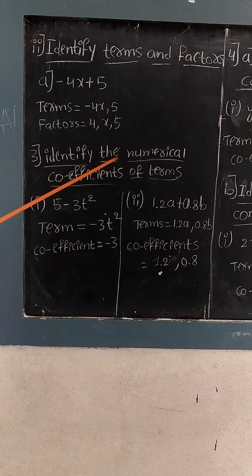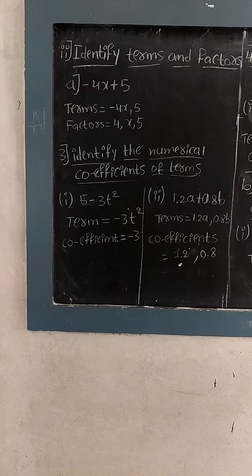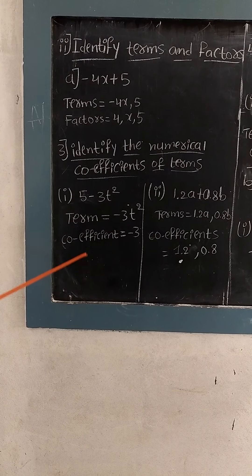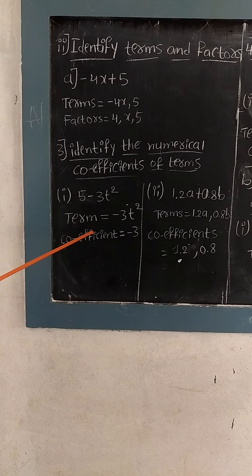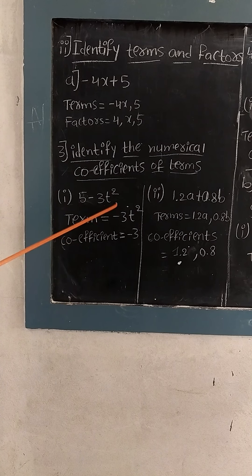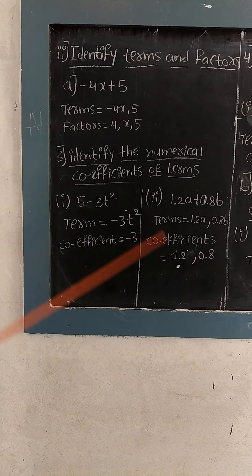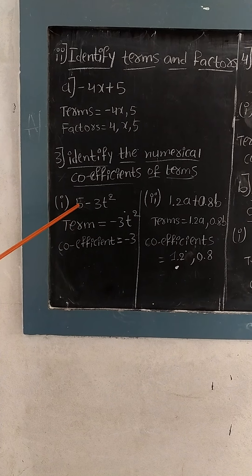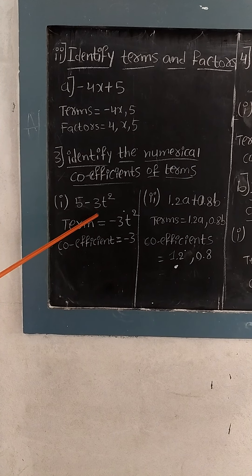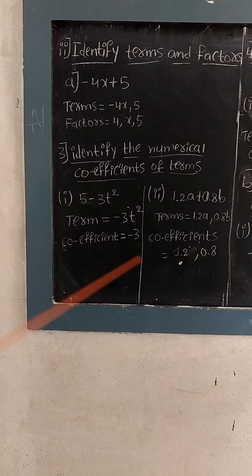The third question is: identify the numerical coefficient of terms. The first question is 5 minus 3t squared. We have to identify the coefficients of the terms. The term must contain a variable, so we take minus 3t squared. The 5 is a constant so we cannot consider it as a term. The coefficient of t squared is minus 3.